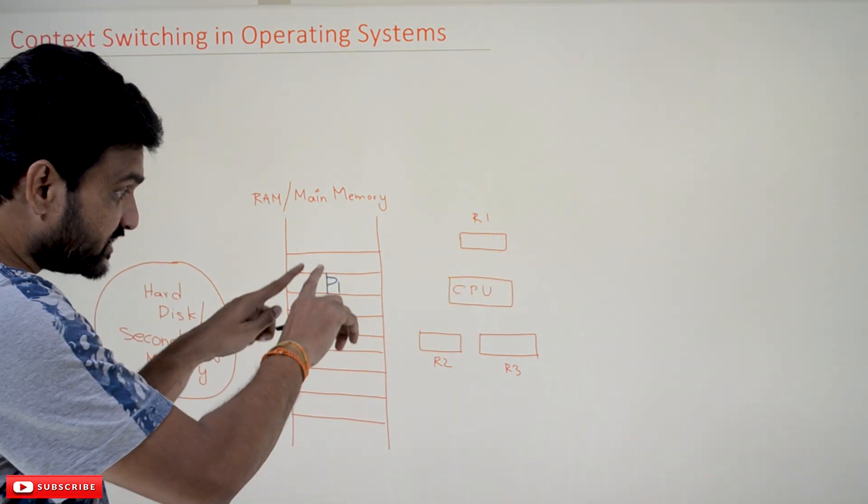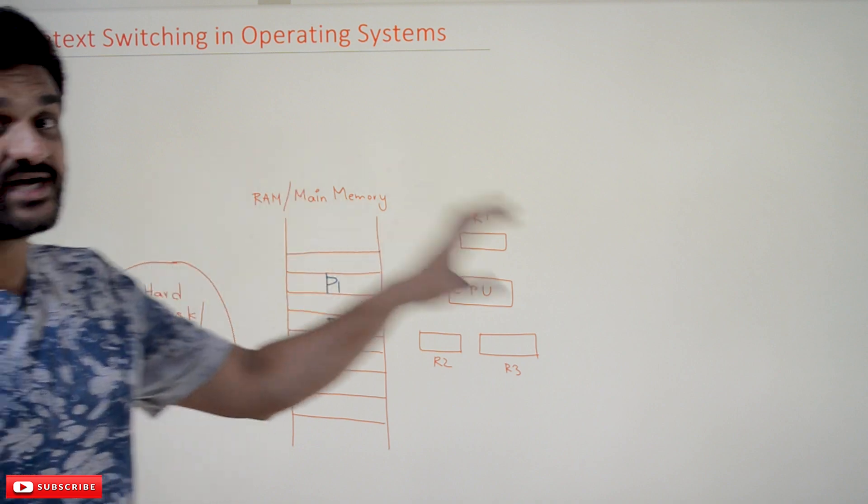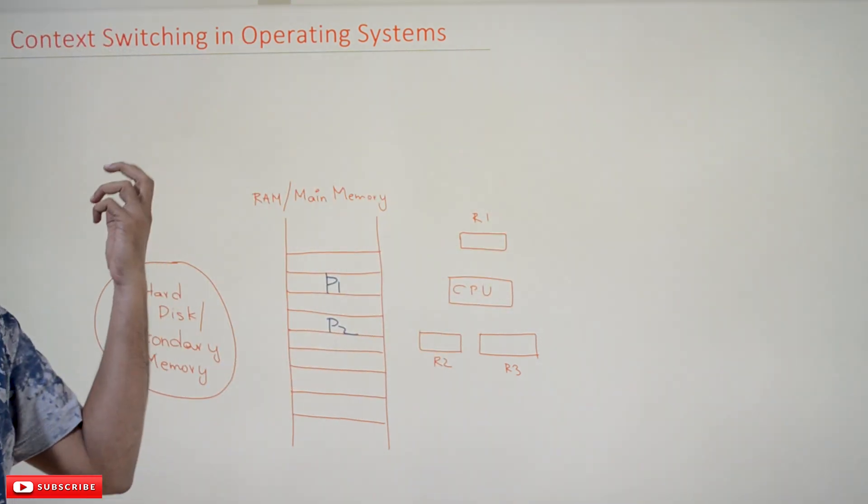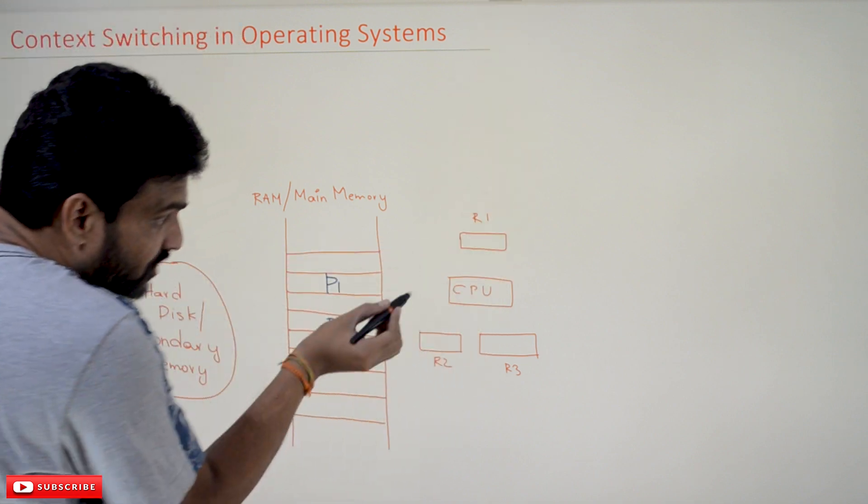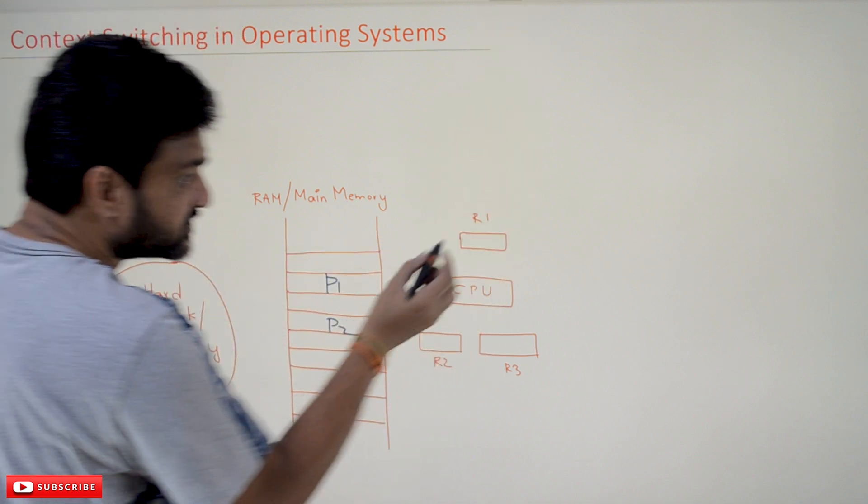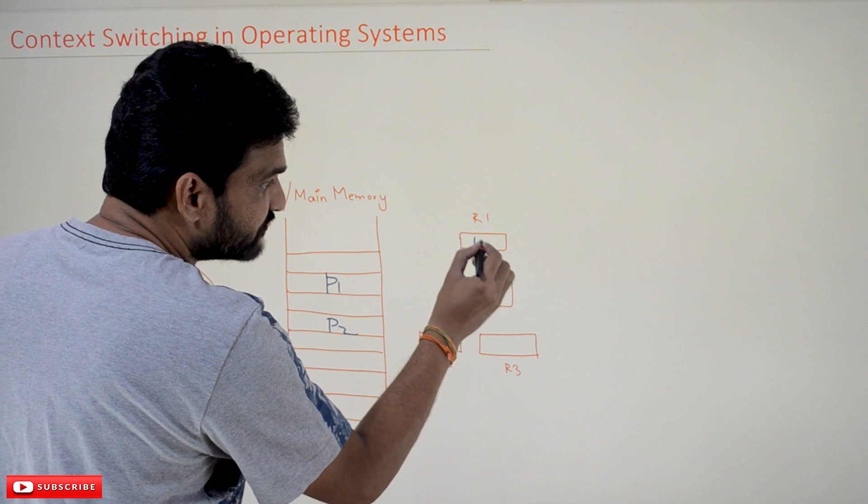So this switching of context of the process is what we call context switching. So what happens is here, the context of this entire process will get saved in the process control block.